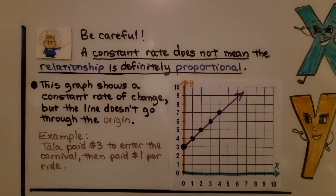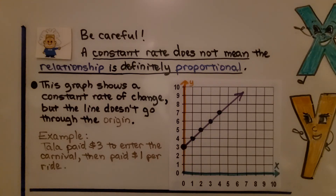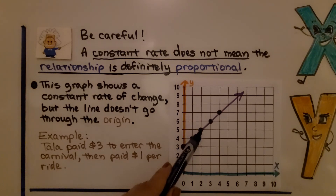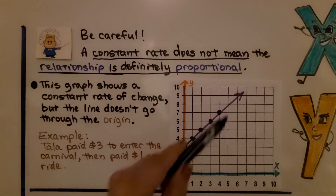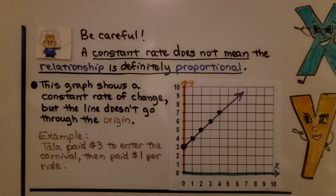But be careful — a constant rate of change does not mean the relationship is definitely proportional. This graph shows a constant rate of change, going up by 1 each time, but the line doesn't go through the origin (0, 0). For example, Tala paid $3 to enter a carnival and then paid $1 for each ride. There was an initial cost of $3, and then it went up constantly by $1 — that is not a proportional relationship because it didn't go through the origin.